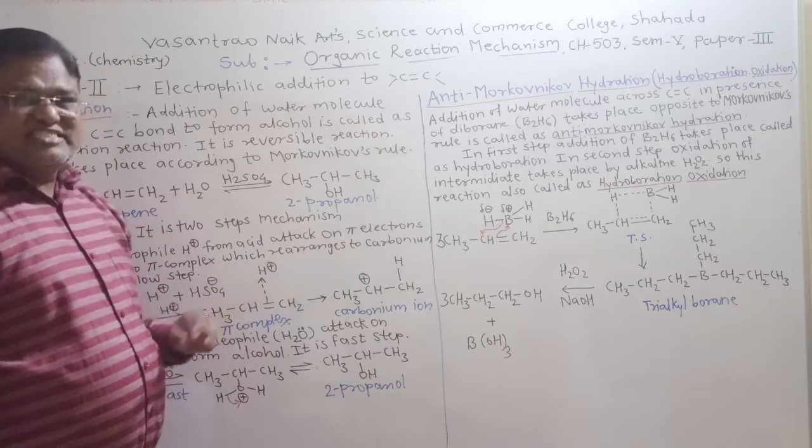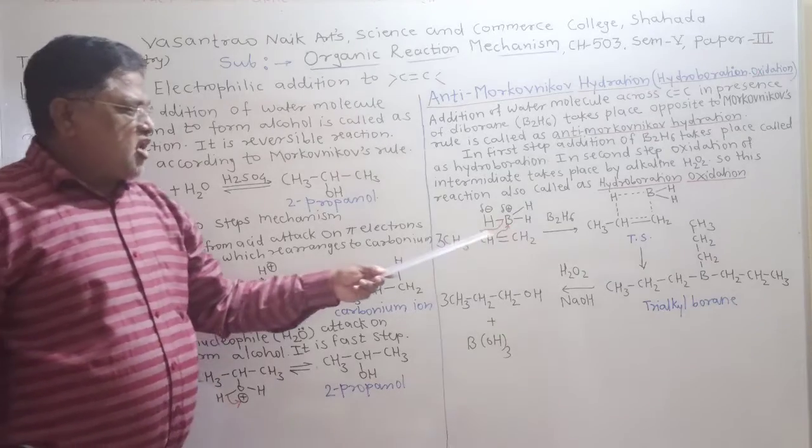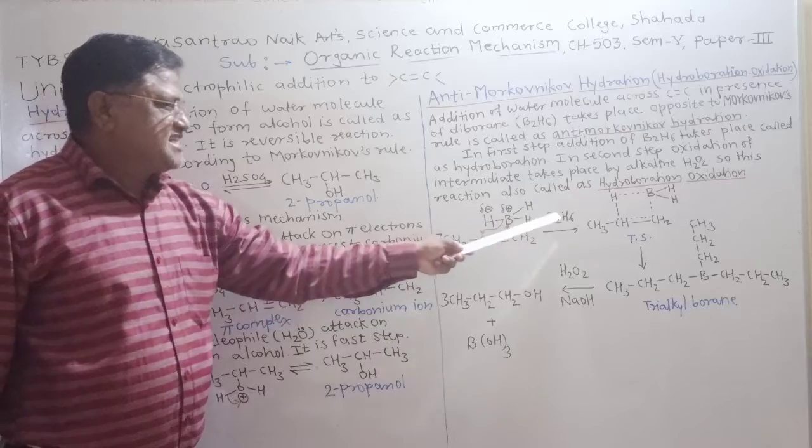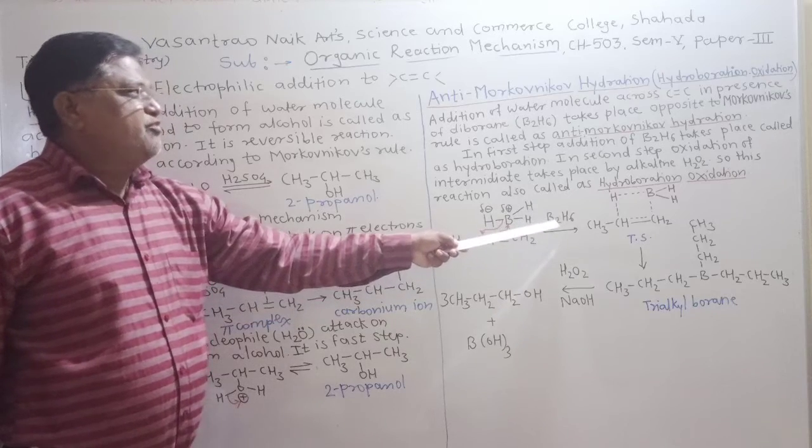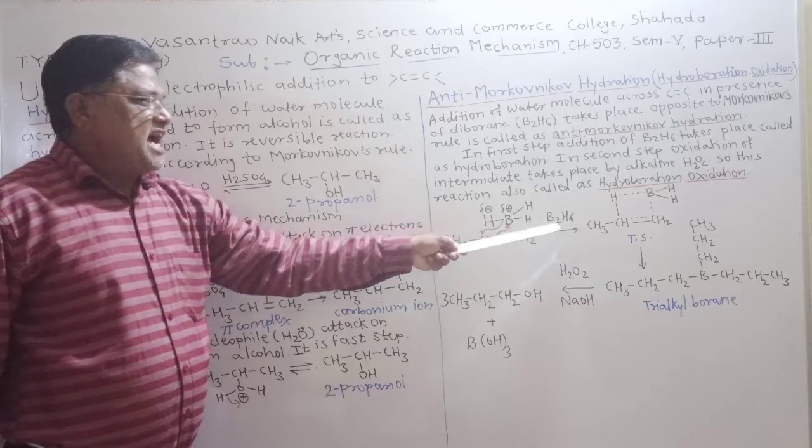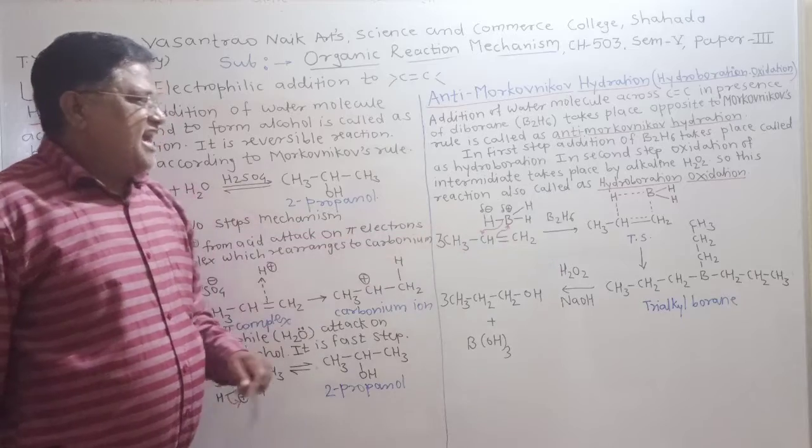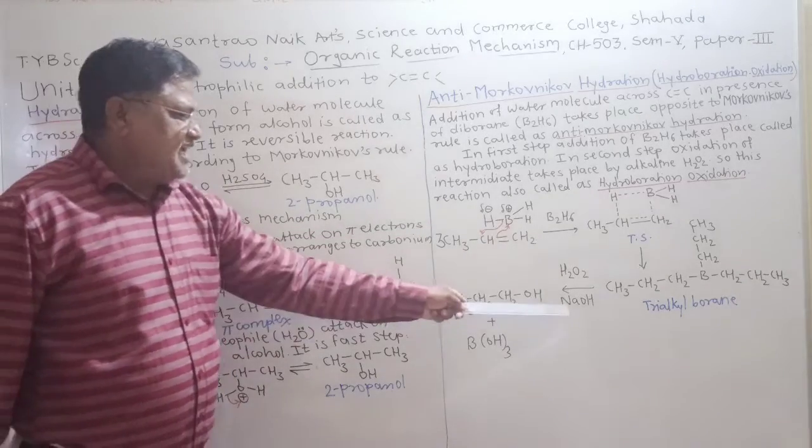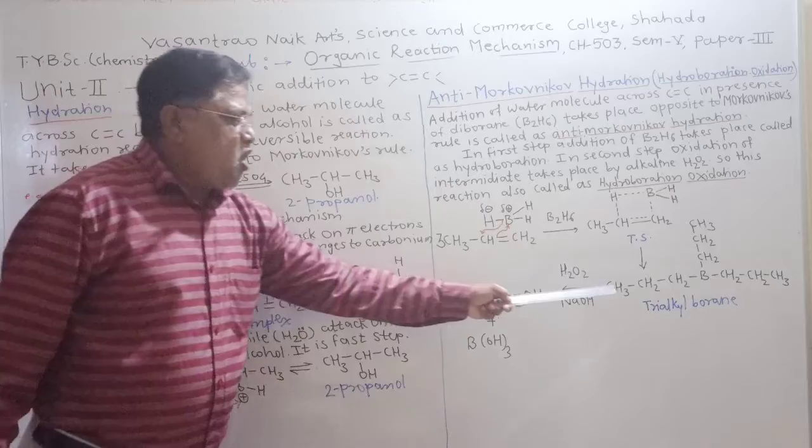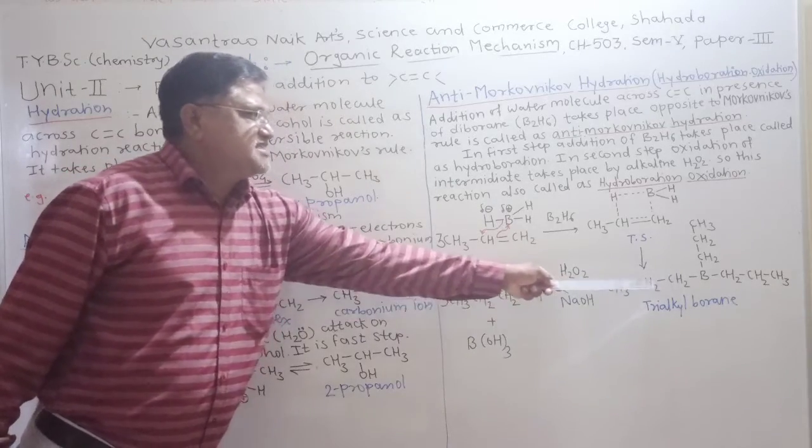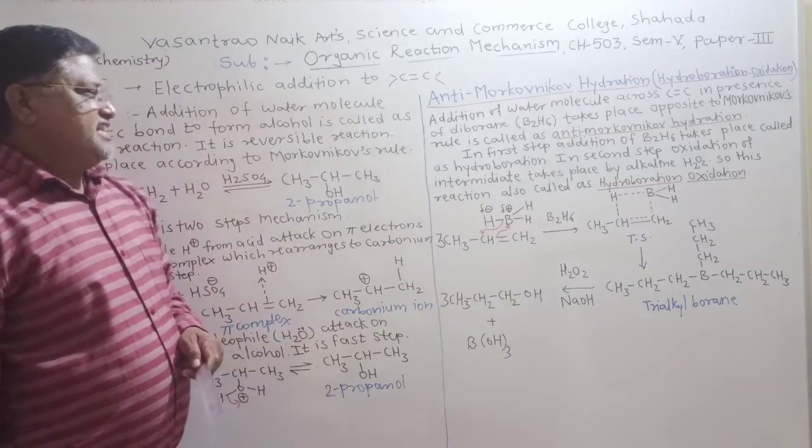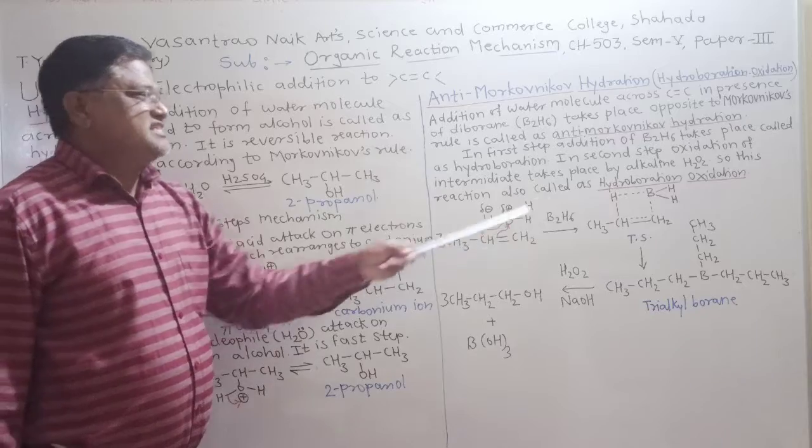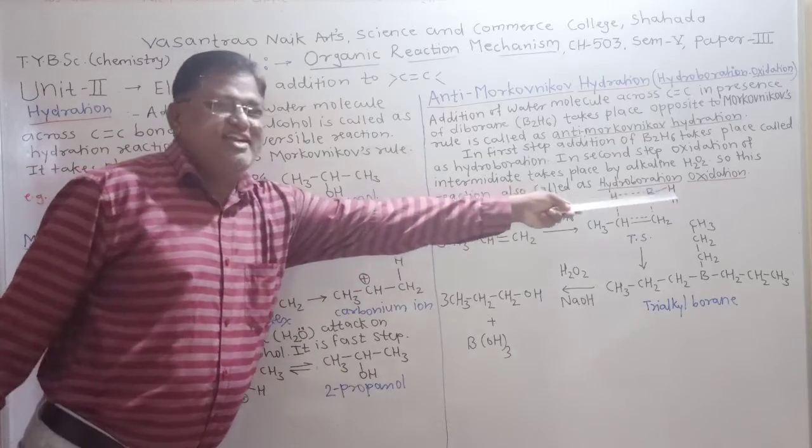In this reaction in first step, the addition of B2H6 takes place and therefore, it is called as hydroboration. And, in second step, the alkaline hydrolysis of intermediate takes place. Therefore, this reaction is also called as hydroboration oxidation reaction.